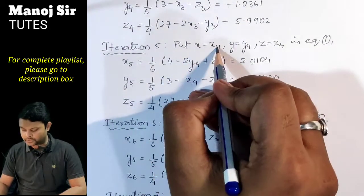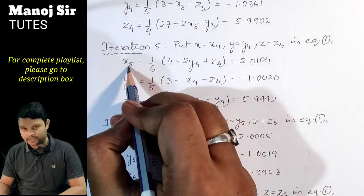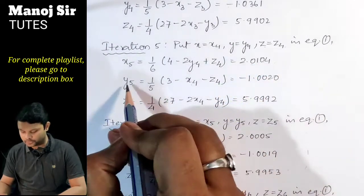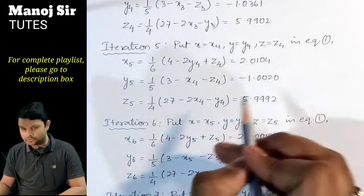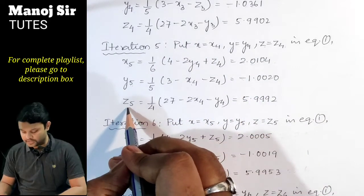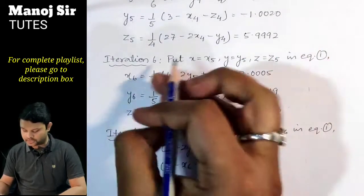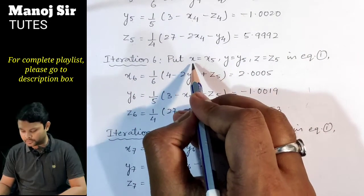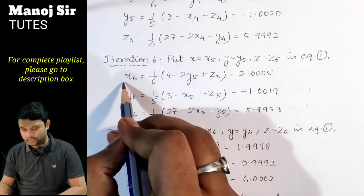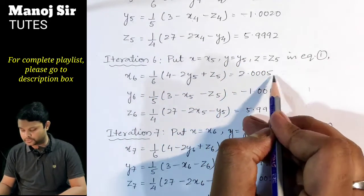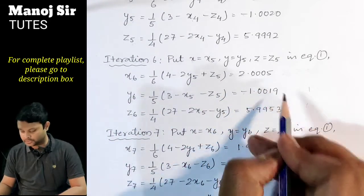For the fifth iteration, substituting x4, y4, z4 into equation (1): x5 = 2.0104, y5 = −1.0020, z5 = 5.9992. For the sixth iteration, substituting x5, y5, z5: x6 = 2.0005, y6 = −1.0019, z6 = 5.9953.